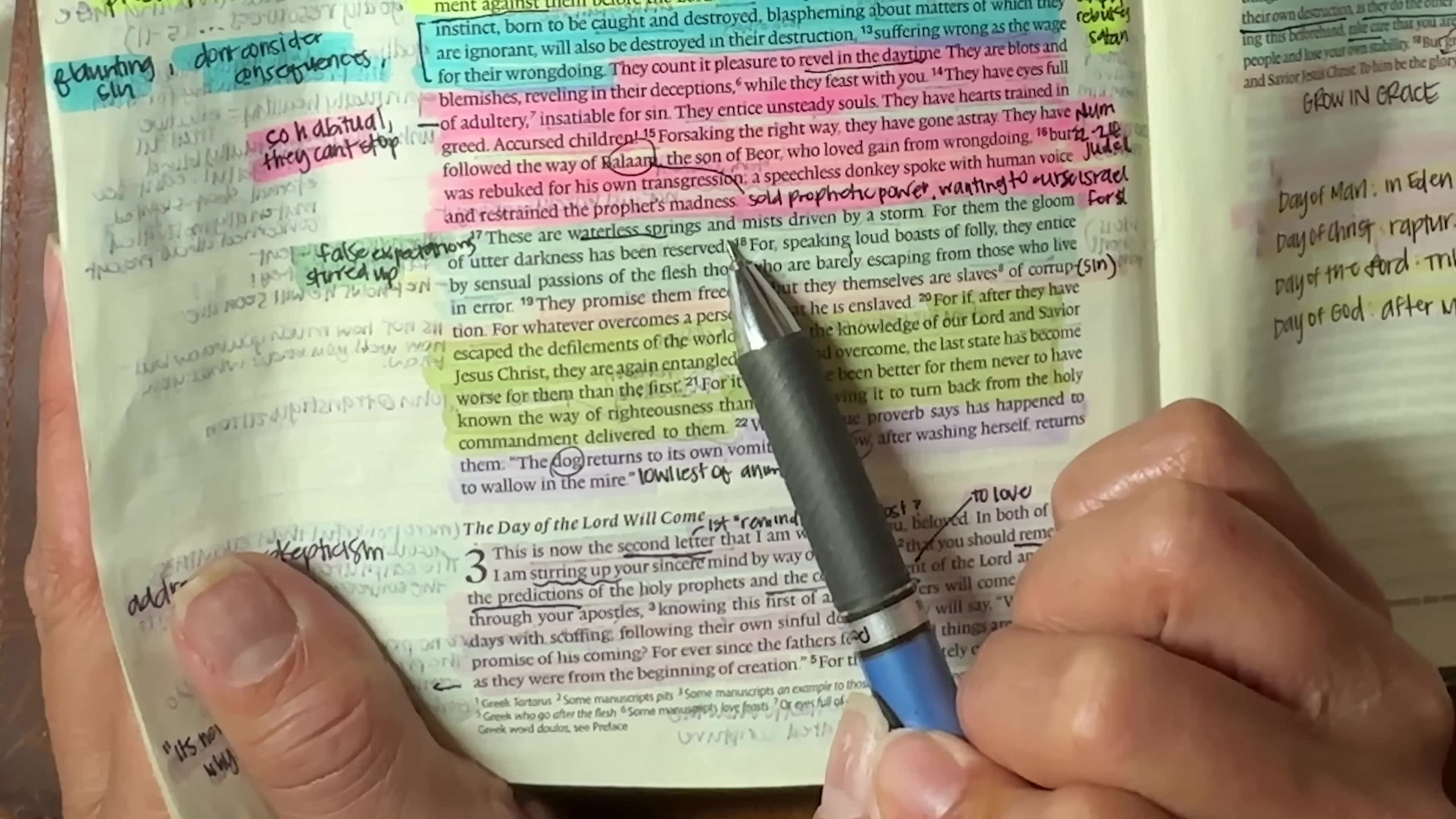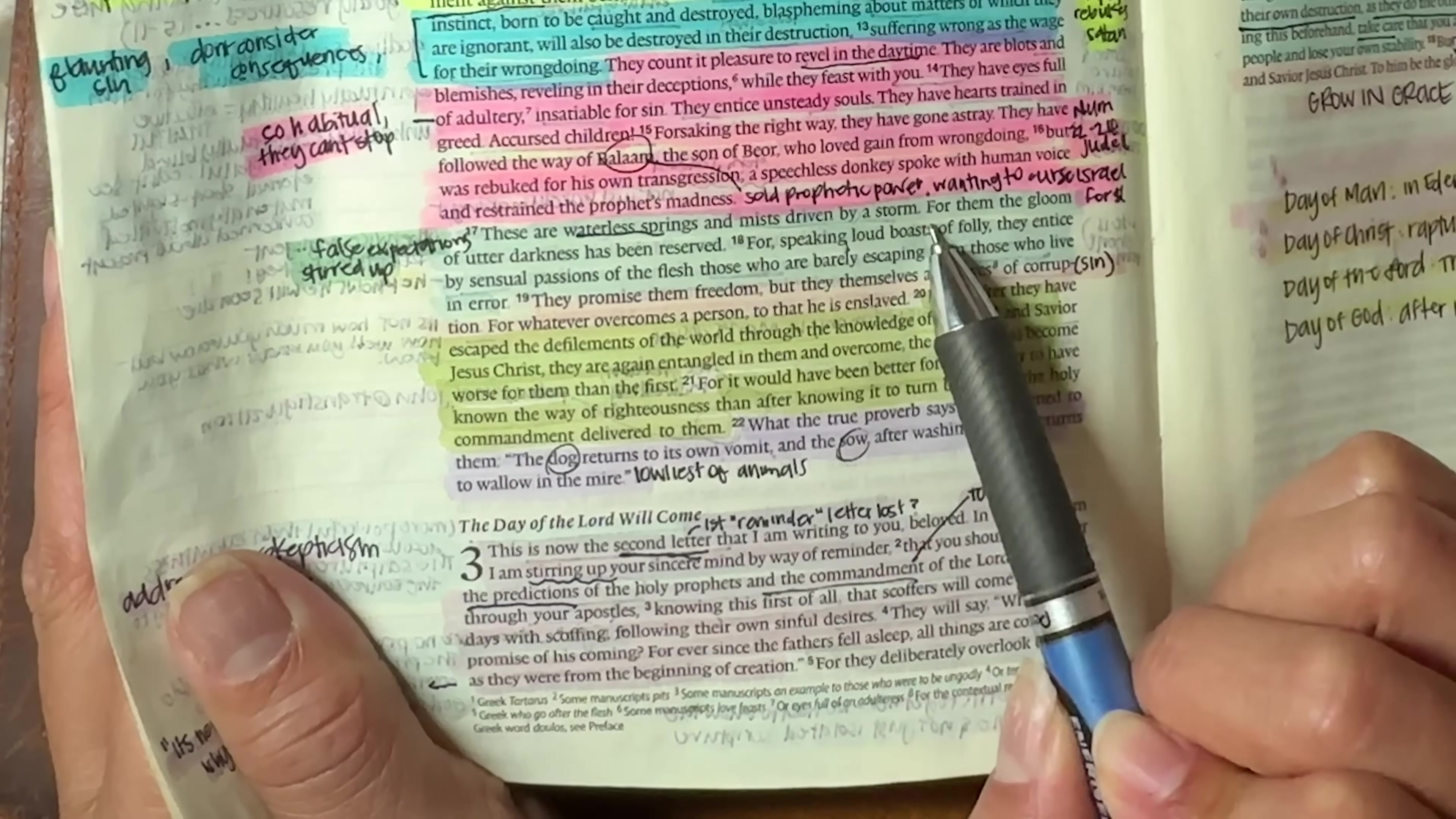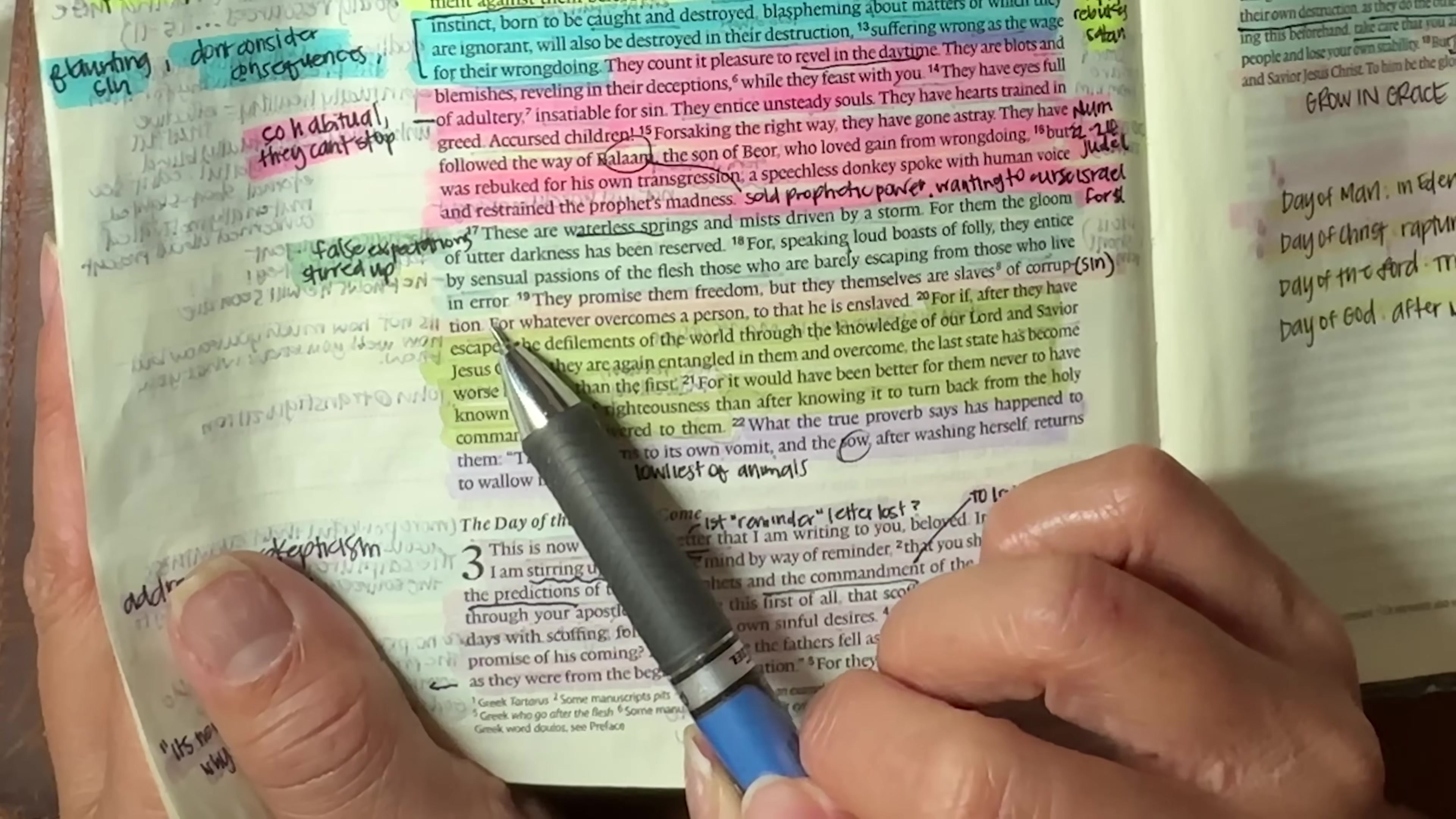Now these are the waterless springs, meaning they are bringing false expectations. They're stirring up a whole lot of things, but really no substance and misdriven by a storm. For them, the gloom of utter darkness has been reserved. For speaking loud boasts of folly, they enticed by sensual passions of the flesh, those who are barely escaping from those who live in error.